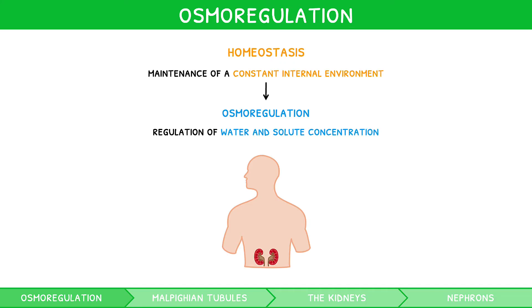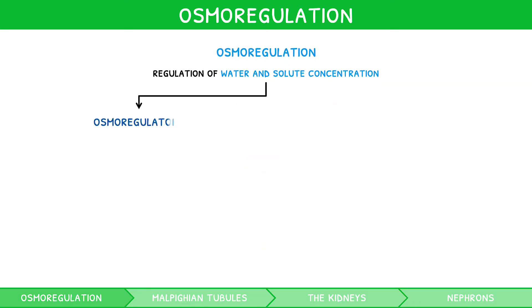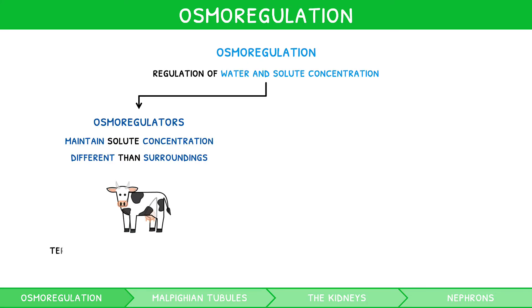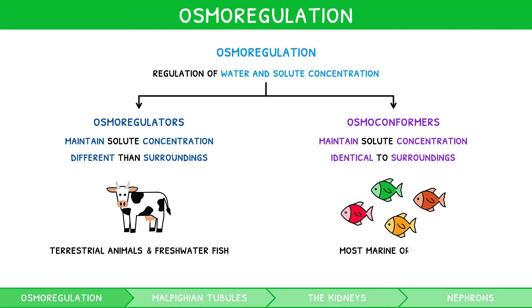All organisms can be classified into two groups based on their osmoregulation. Osmoregulators are organisms that maintain a solute concentration different to that of their surroundings — this occurs in most terrestrial animals and freshwater fish. Osmoconformers are organisms that maintain a solute concentration identical to that of their surroundings — this occurs in most marine organisms.